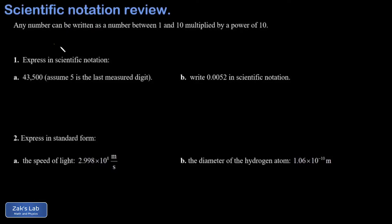In this video we're going to quickly cover how to write numbers in scientific notation and then how to convert numbers in scientific notation back into standard form. The main idea with scientific notation is that any number can be written as a number between 1 and 10 multiplied by a power of 10.